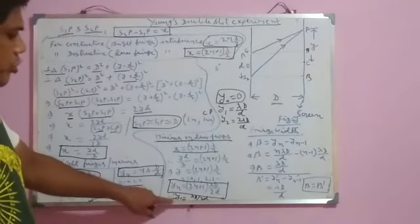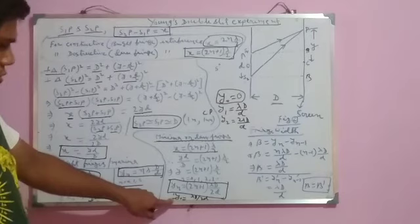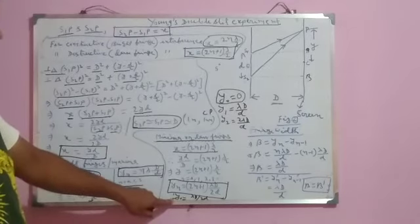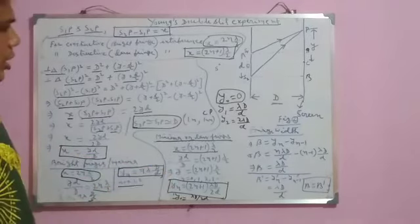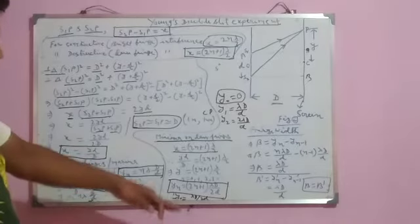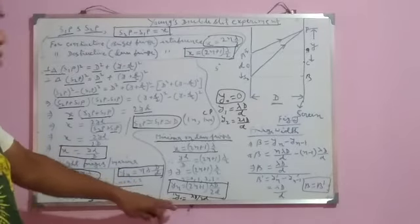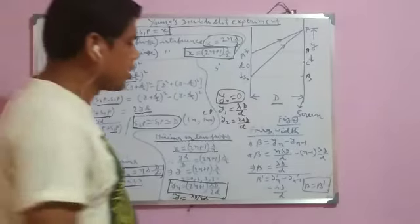Similarly, if N = 1, we will get the second dark fringe, and so on. You just have to go through this notation carefully.